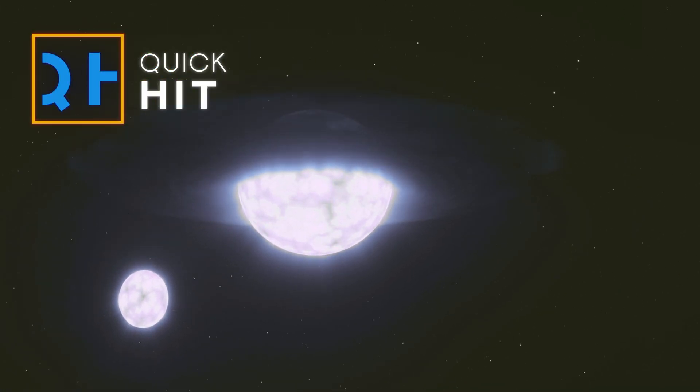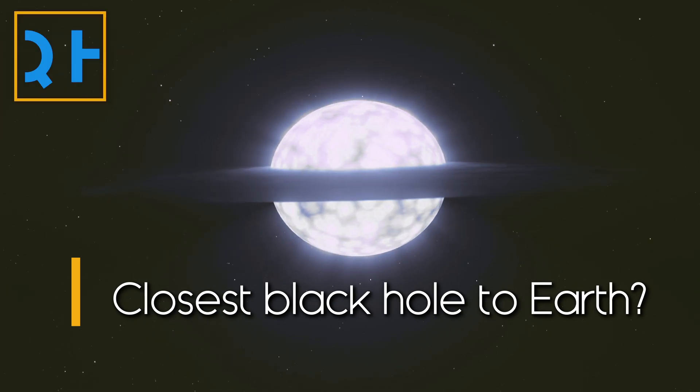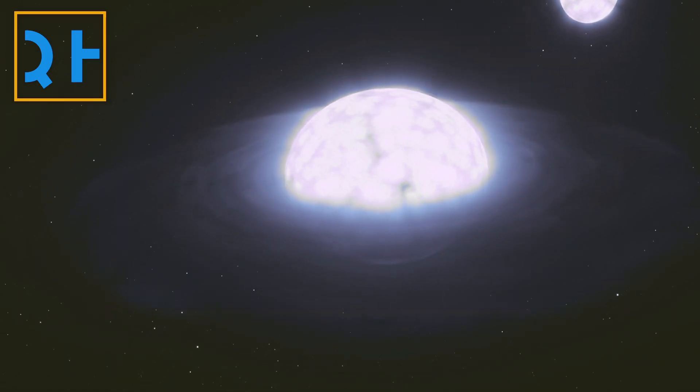In 2020, astronomers turned their telescopes to a nearby star system and saw something incredible. Two stars locked in orbit around what appeared to be a black hole.